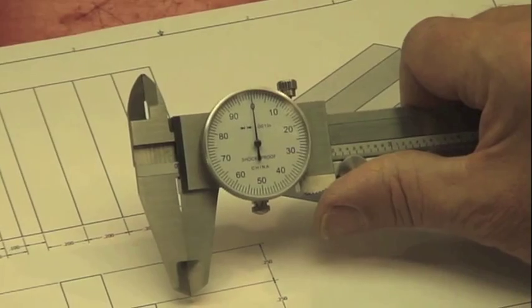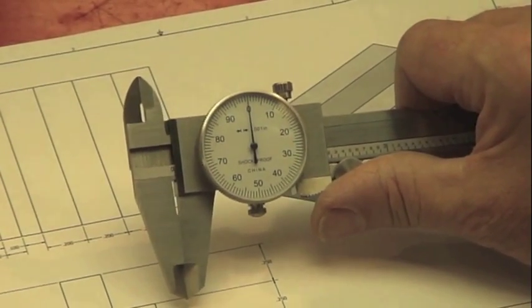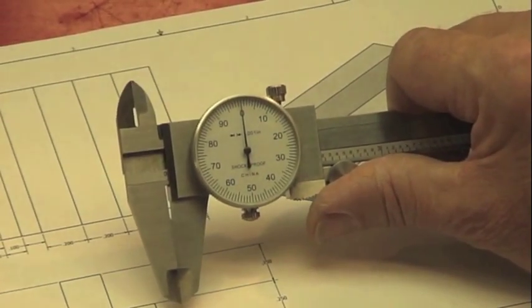The first step is to close the jaws and make sure the reading is zeroed. If the needle doesn't point to zero, loosen the face and rotate it to align with the needle.